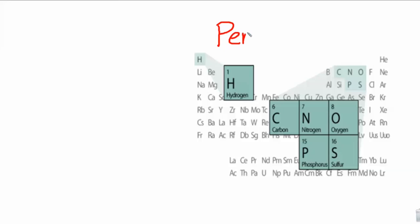Alright, I'm showing you the periodic table, and you'll notice that certain elements are highlighted in green. We've got hydrogen, carbon, nitrogen, oxygen, phosphorus, and sulfur.